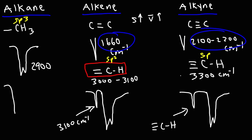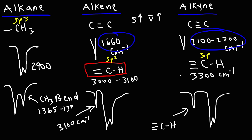Going back to alkanes, there are two signals you want to be familiar with. The first is the CH3 bend, which has a signal of 1,365 to 1,385. The other can vary between a CH bend, CH2 bend, or CH3 bend, ranging between 1,400 and 1,450.